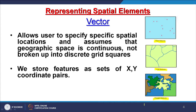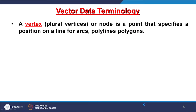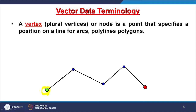In case of point data, the features or point features are stored as x, y geographic coordinate pairs. We also call these nodes — or vertex, and in plural vertices — a node is a point that specifies a position on a line, arc, polyline, or polygon. For a line, this is the begin point and this is the end point — that is why you see the arrow directions. I know the magnitude — the length of this line — and the direction is also there. These are the begin node, end node or vertex.